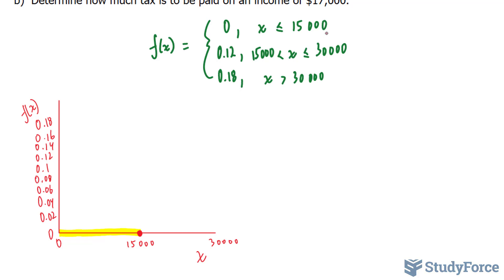And x must be greater or equal to $30,000. So 0.12 right here will be represented by a hollow circle. And this will extend all the way to $30,000. And we're going to put a solid circle at $30,000.